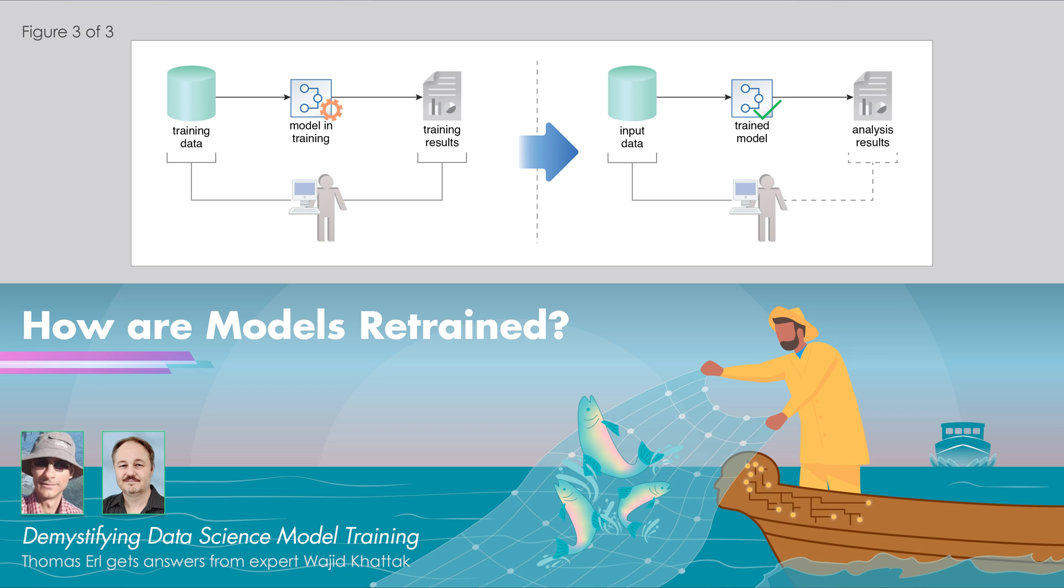So the jump to a different algorithm would only come if there have been some new developments and there's some evidence that's available that by switching to the other algorithm there would be a gain of 10 to 20 percent.